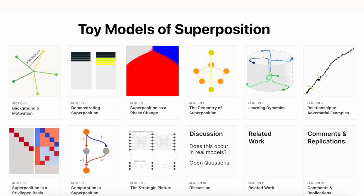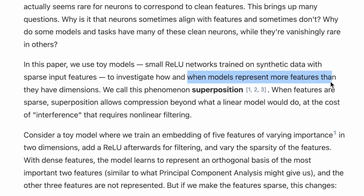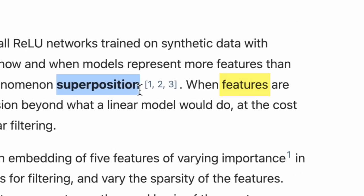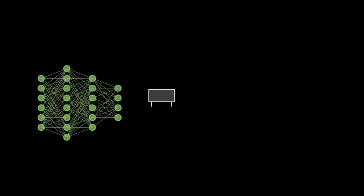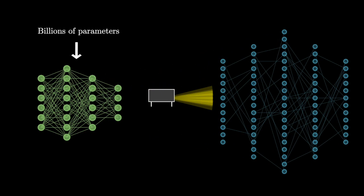The kind of superposition we're referring to comes from the paper Toy Models of Superposition, which describes how neural networks can represent many more features than the number of neurons available. It's not an intuitive idea at first, and we'll unpack what features mean soon. But if superposition really exists in current neural networks, it may imply that the model with hundreds of billions of parameters is just a compressed version of an even larger and sparser system.